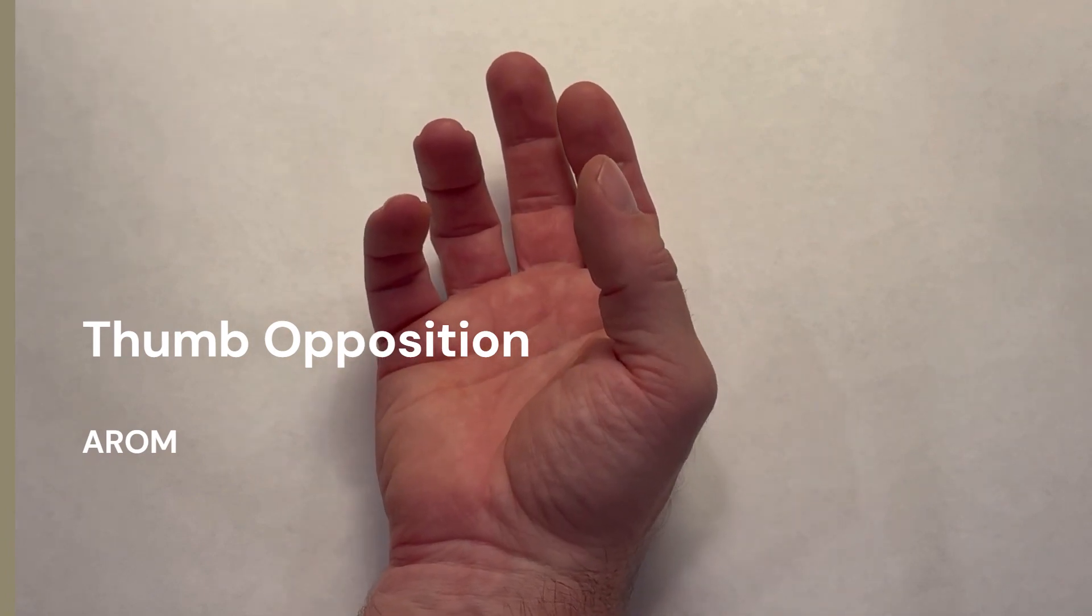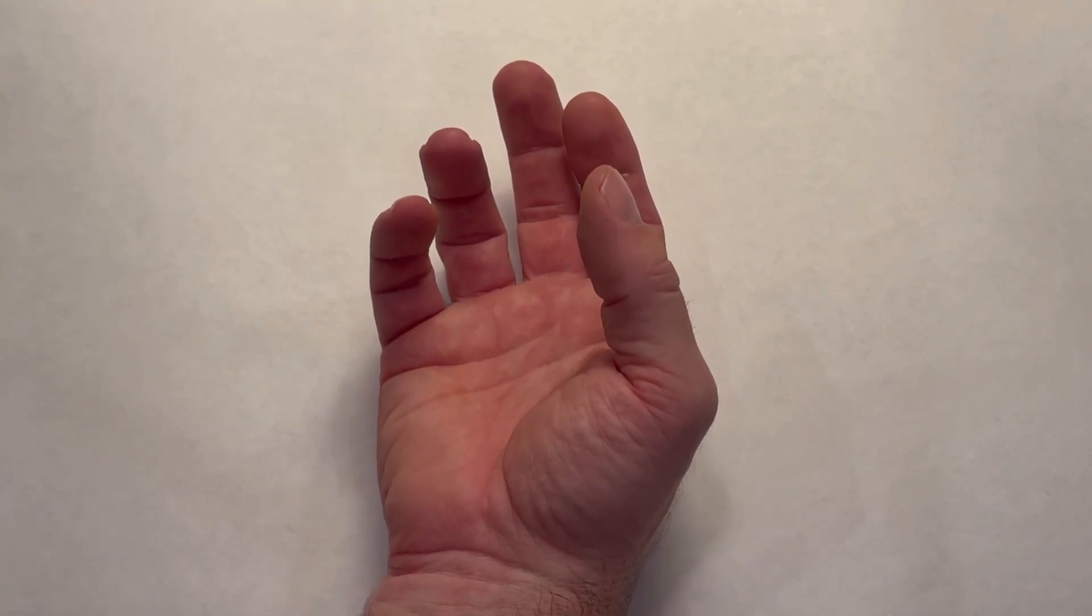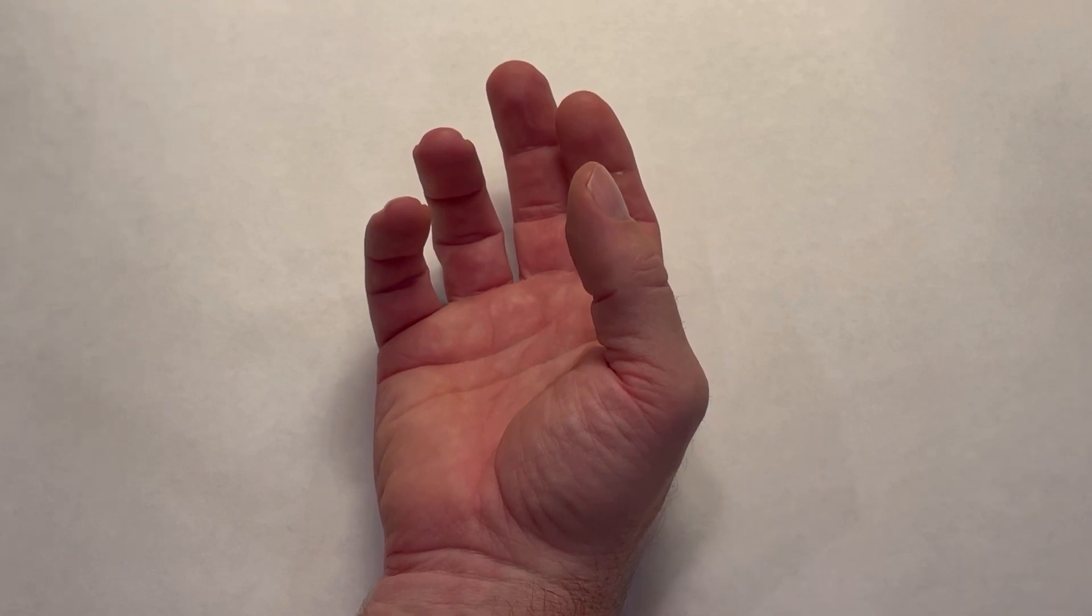To measure thumb-to-small-finger opposition, we use the Kapanji Method.